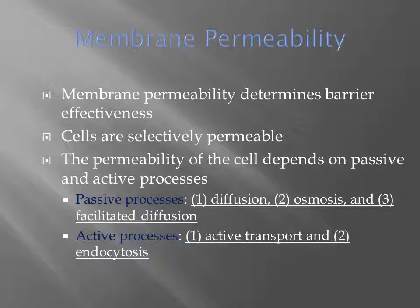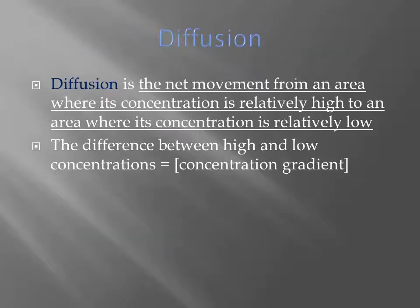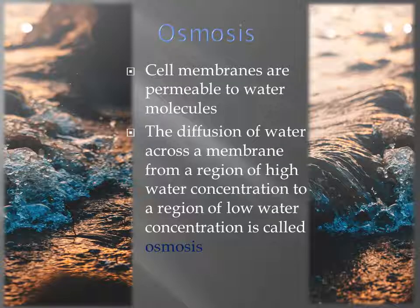Membrane permeability determines barrier effectiveness. Cells are selectively permeable, and permeability depends on passive and active processes. Passive processes include diffusion, osmosis, and facilitated diffusion. Diffusion is the net movement from an area of relatively high concentration to an area of relatively low concentration. The difference between high and low concentrations is called the concentration gradient.